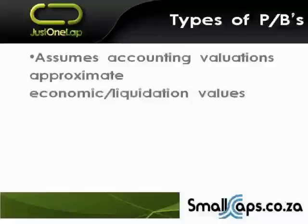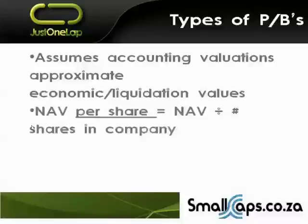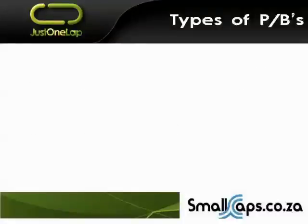NAV assumes the accounting valuation approximates the economic and liquidation value. The way to calculate NAV per share is the net asset value of the company — equity — divided by the number of shares in the company. We're looking at a per-share basis because anything at company level isn't meaningful for a minority investor. You want to work out whether a single share on the stock market is worth buying. Hence we talk about NAV per share. The first price-to-book ratio type is based on NAV per share.